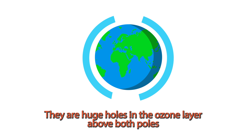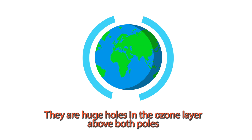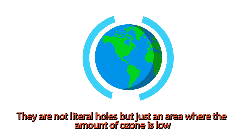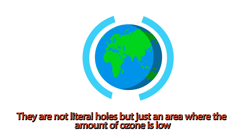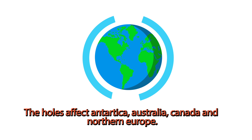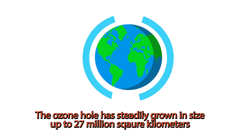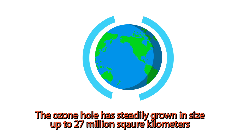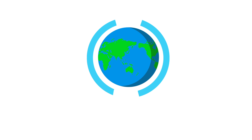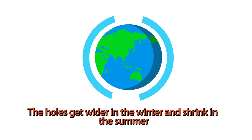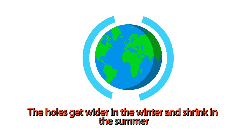There are huge holes in the ozone layer above both poles. They are not literal holes, but just areas where the amount of ozone is reduced. The holes affect Antarctica, Australia, Canada, and Northern Europe. The ozone hole has steadily grown in size up to 27 million square kilometers. The holes get wider in the winter and shrink in the summer.